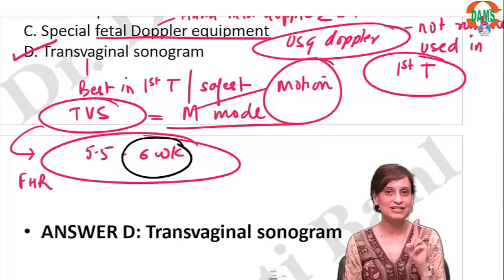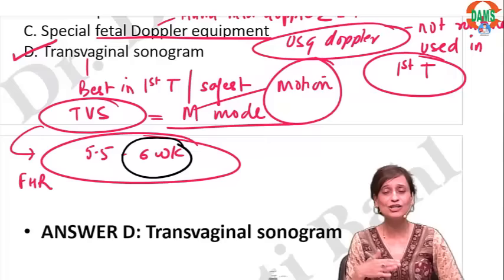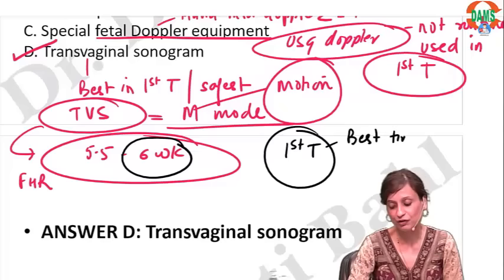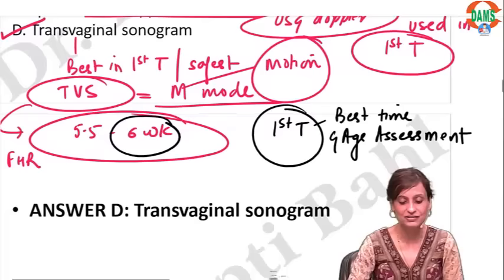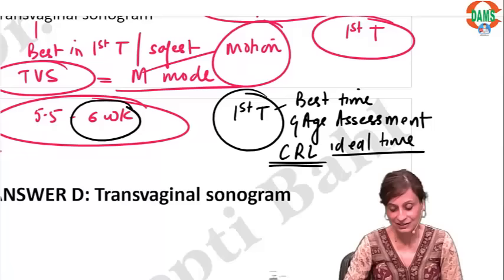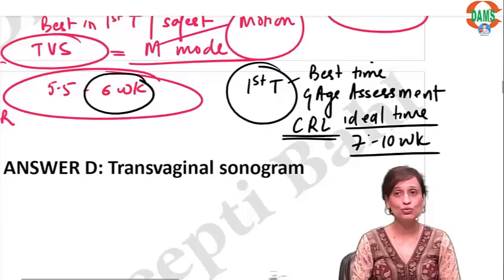This is a good time to pick up cardiac activity. Also remember: first-trimester ultrasound is the best time for gestational age assessment. The parameter used is crown rump length. The ideal time for crown rump length is 7 to 10 weeks, although it can be used up to 14 weeks.